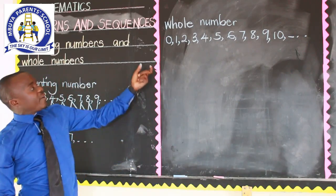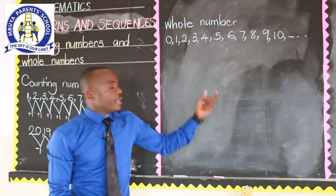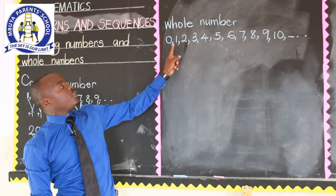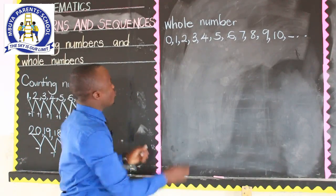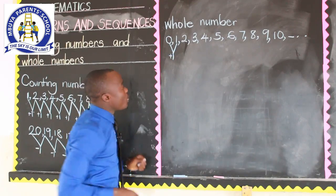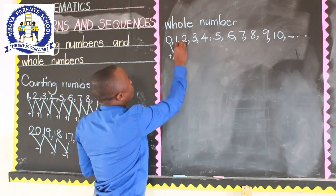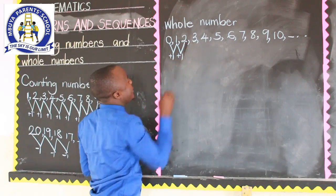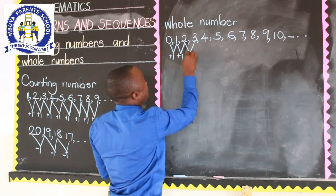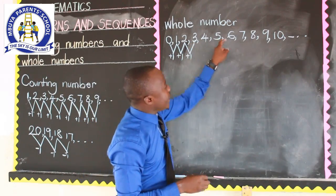When you look at whole numbers, you will realize that from the first whole number to the second one, we also add one. From zero to one there is that interval of adding one. From one to two it is also adding one. From two to three it is adding one. Three to four, we have added one, like that.